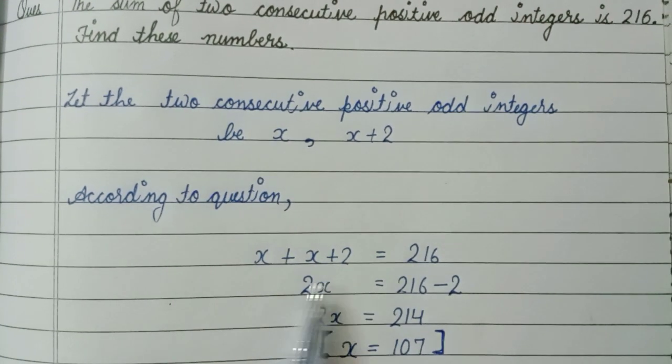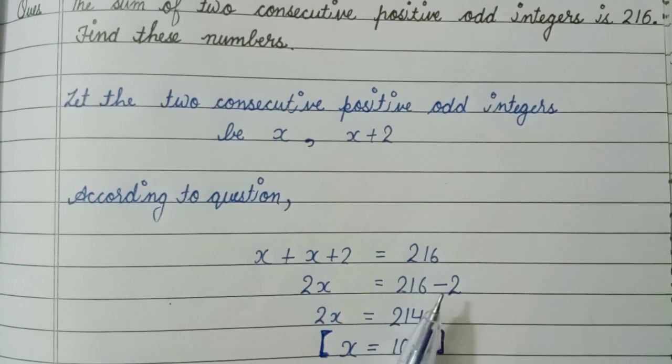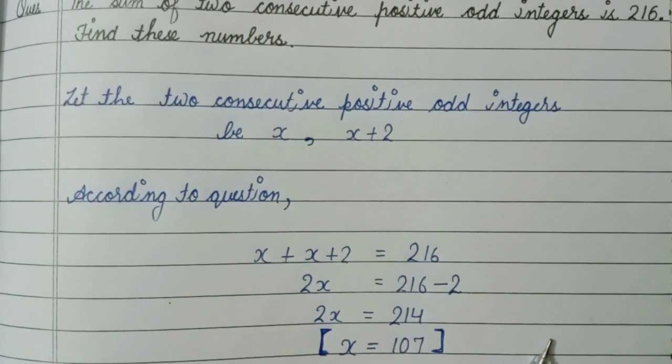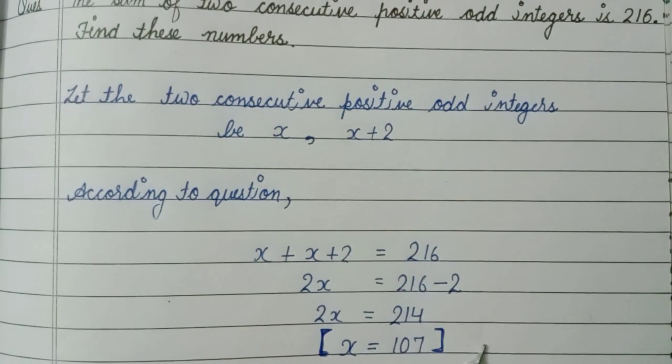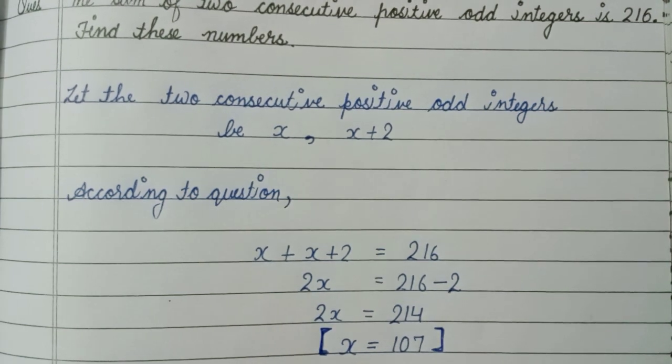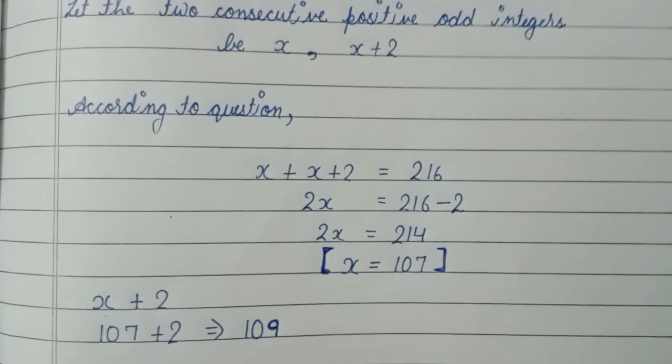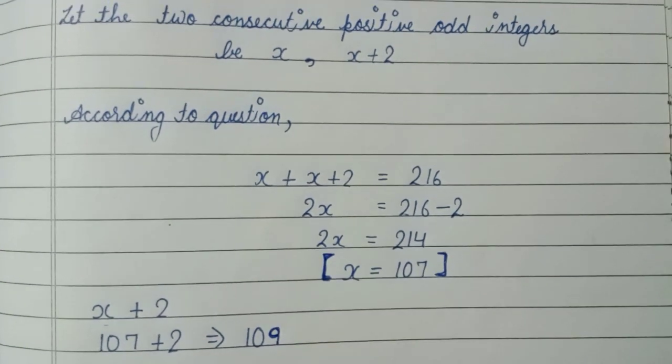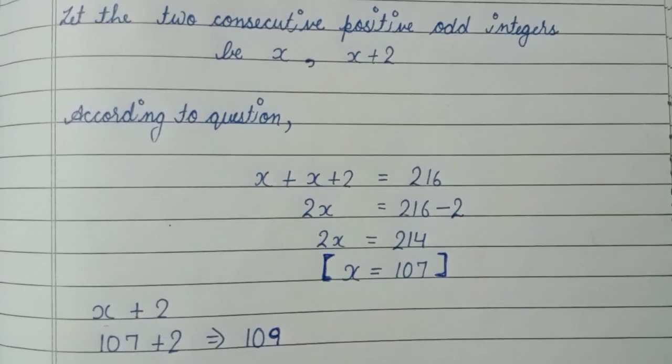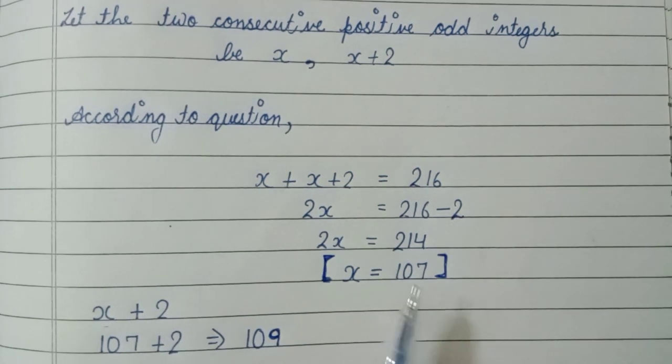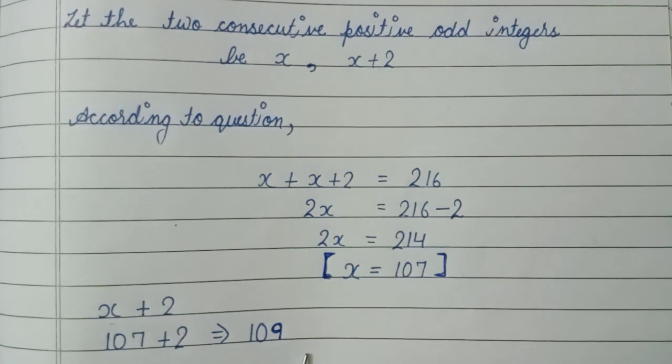We have the equation x plus x plus 2 equals 216. After solving, we have our numbers: x equals 107 and x plus 2 equals 109, the second integer. So this is our answer.